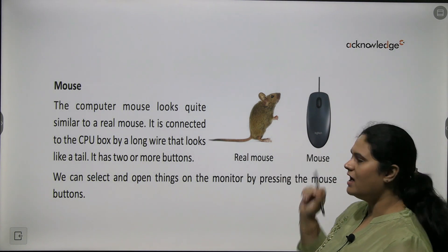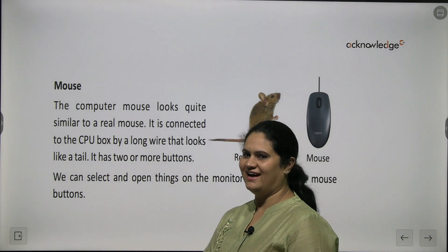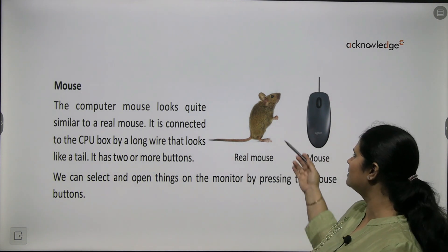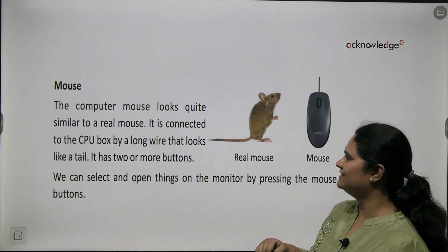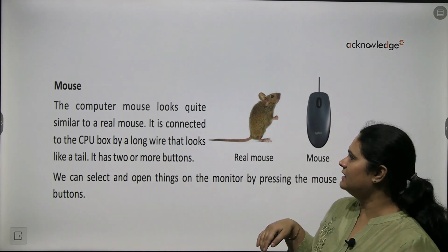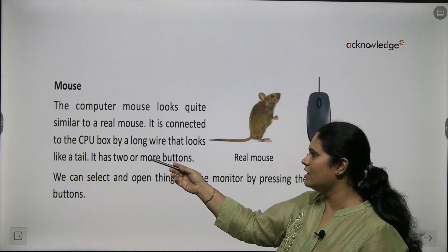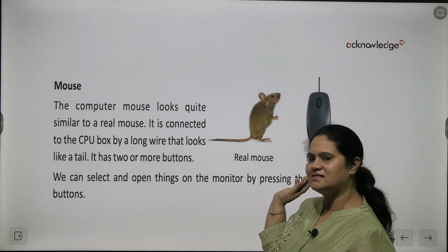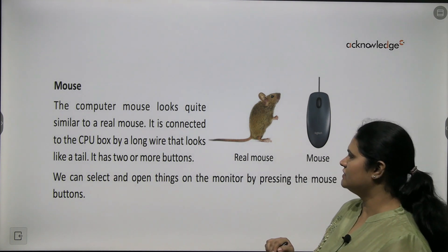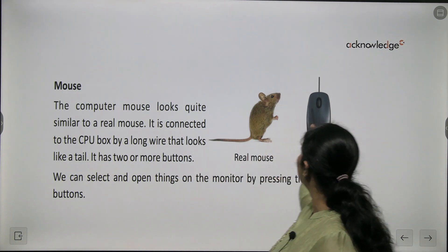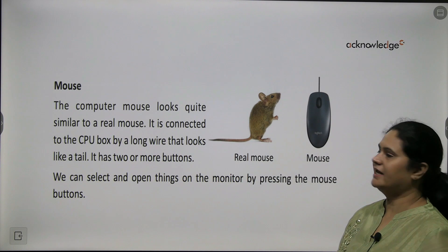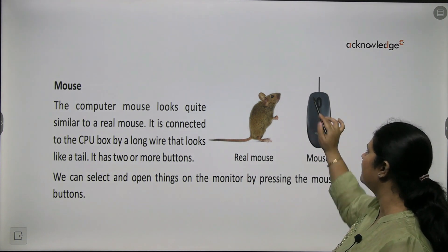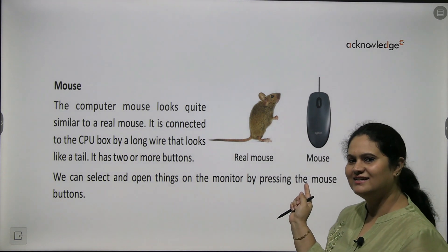Now this is a mouse. Have you seen a mouse in your house? This is also a mouse that is connected to the computer. It is connected to the CPU box by a long wire that looks like a tail — just like a real mouse has a tail. You can see it has two buttons and a scroll wheel. You can select and open things on the monitor using these buttons.